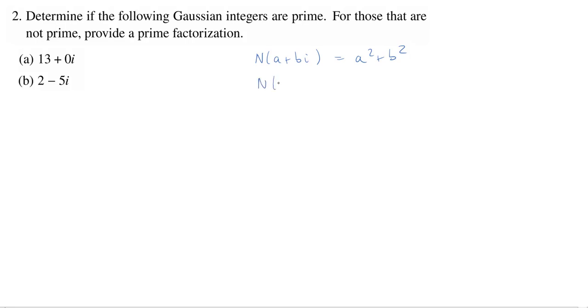There are some very useful properties of the norm map that we're going to employ. If you have the norm of a product, this will be the product of the norms. Also, we know that if the norm of some Gaussian integer is equal to 1, then that Gaussian integer is a unit.